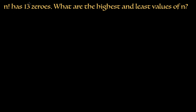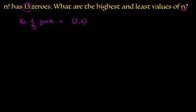n factorial has 13 zeros — what are the highest and least values of n? The number of zeros at the end of any factorial depends on how many pairs of 2 and 5 we have. Since the number of 5s is always less than the number of 2s, we can summarize: the number of zeros equals the total number of fives available in that factorial.